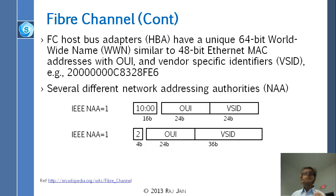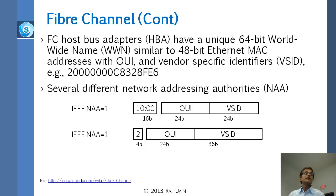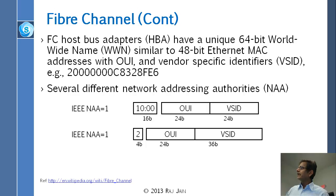Then you add VSID — vendor specific ID — which is the sequential number that vendors put on every device one after another. In the beginning is who gave you that OUI. It could be given by ISO or somebody else, not just IEEE. So there are different schemes, and the first 4 bits will tell you who gave it.